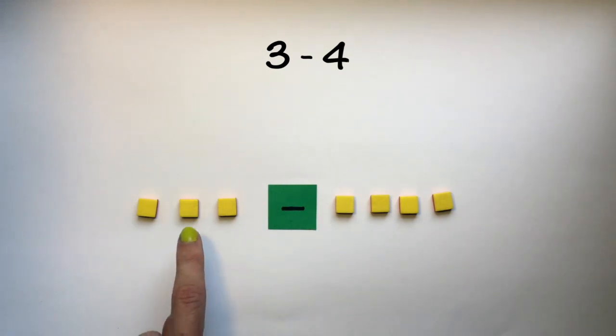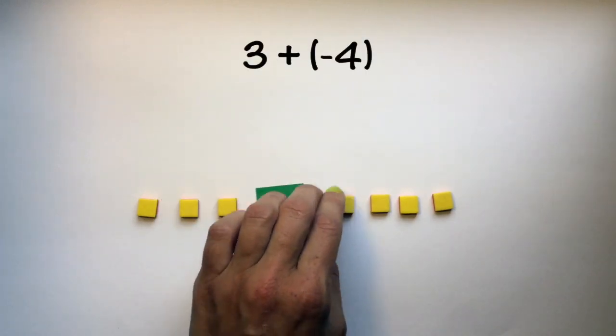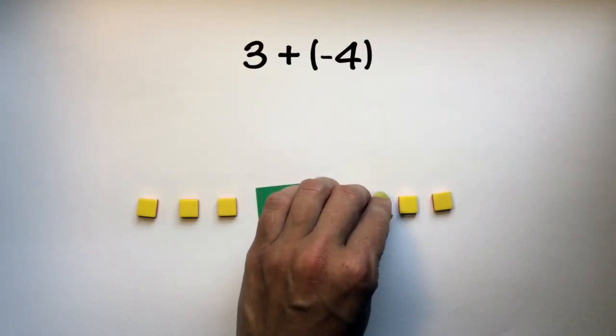Let's imagine this as three degrees. Let's say it's three degrees outside and then we're subtracting four degrees. The temperature is going to drop by four degrees. Now subtracting four degrees is the same thing as adding negative four degrees.